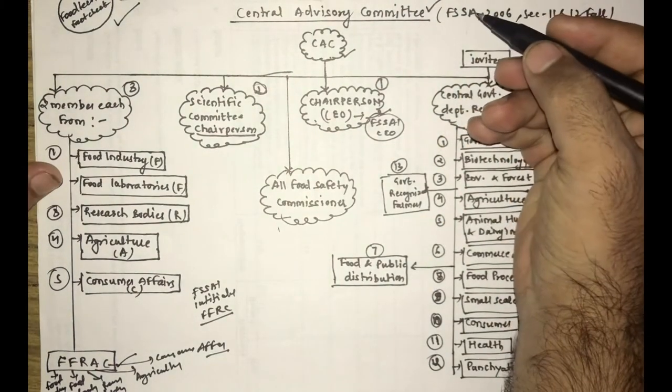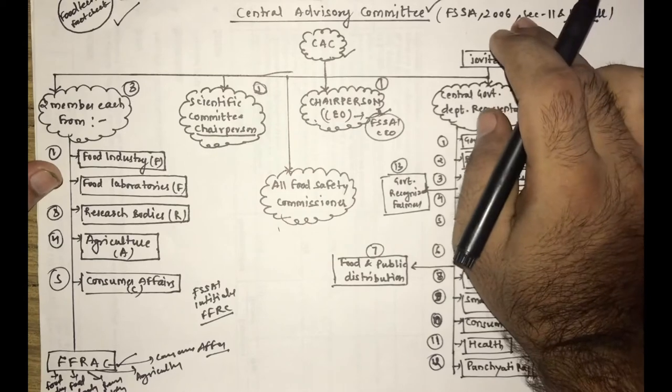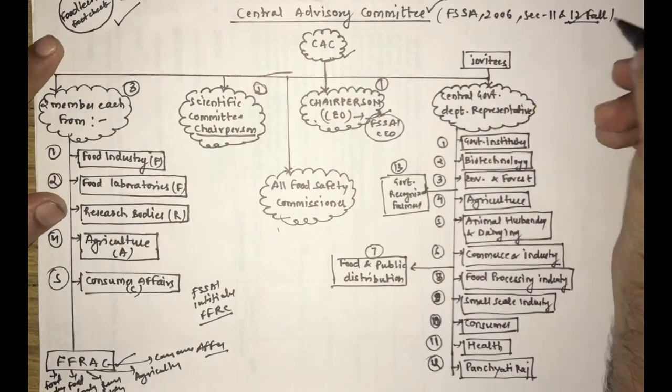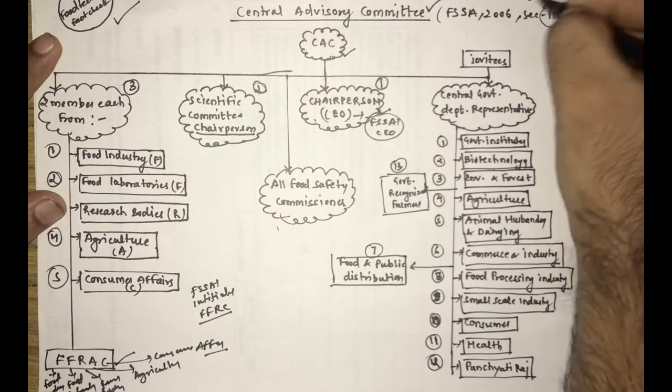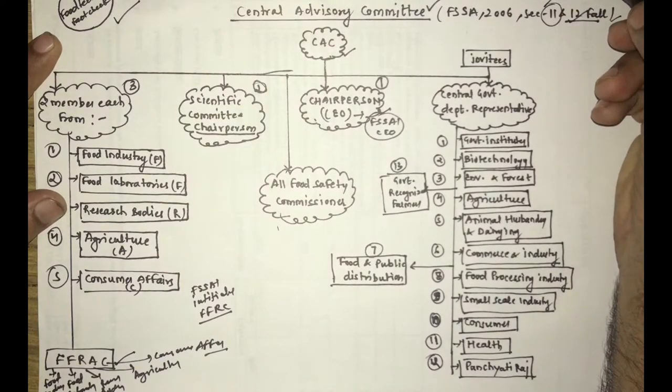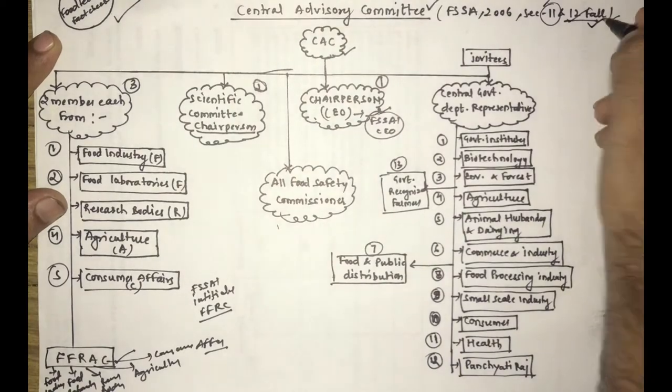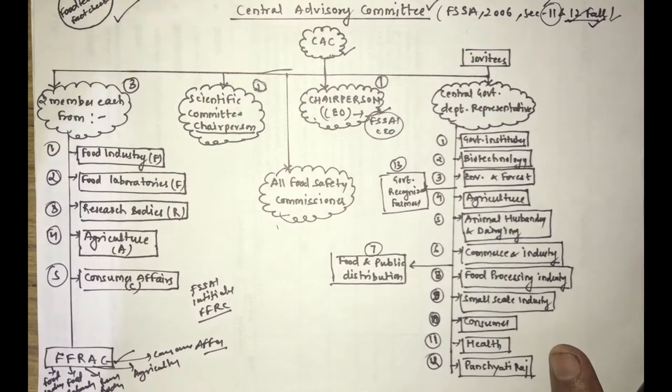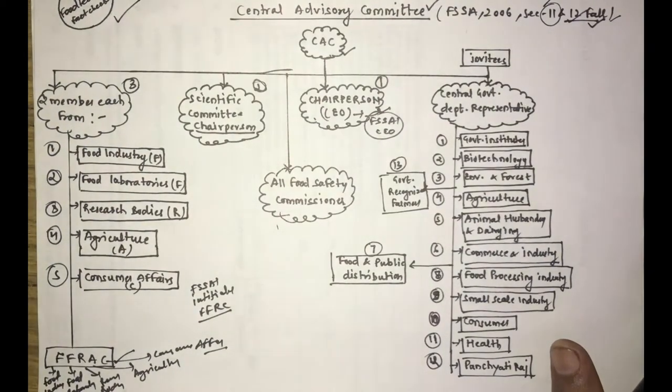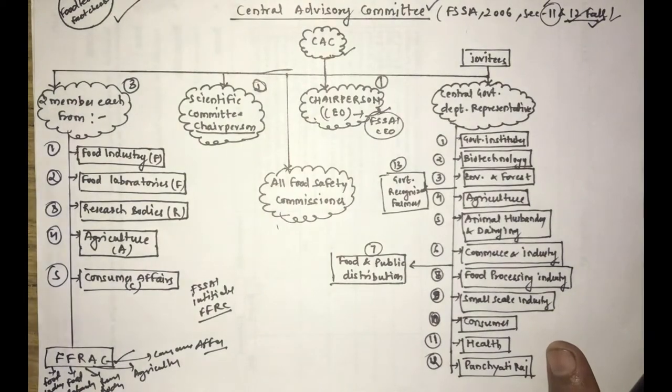The Central Advisory Committee is in the FSS Act, the Food Safety Standard Act, in section 11 and 12. It talks about the structure, the composition, the members and functions. We discussed about the functions in section 12. As you can remember, if you mention the section in the exam, you may find an extra benefit.